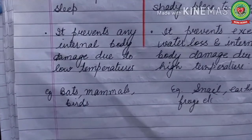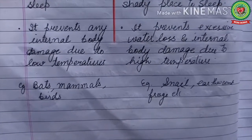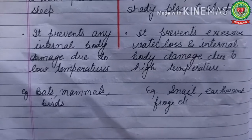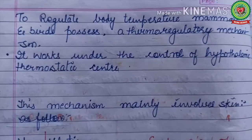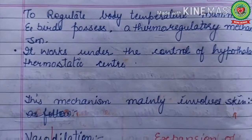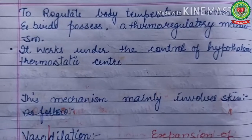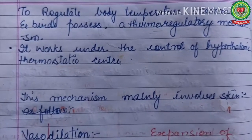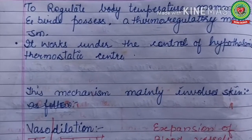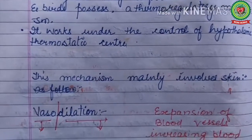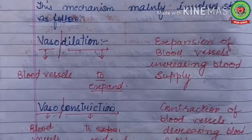Examples for hibernation include bats, mammals, and birds. Examples for estivation include snails, earthworms, and frogs. To regulate body temperature, mammals and birds possess a thermoregulatory mechanism controlled by the hypothalamic thermostatic center, and this mechanism mainly involves the skin.